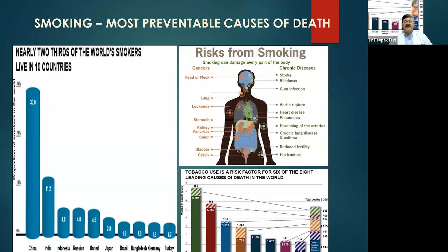Smoking is one of the leading preventable causes of high blood pressure as well as heart disease and is the leading cause of death. Prevalence of smoking is highest in countries like China, India, Indonesia, and Russia, and it is increasing in females. Apart from causing high blood pressure, smoking can cause cancers in almost any organ, stroke, blindness, aortic aneurysms, peripheral vascular disease, chronic lung disease. Of the top eight causes of death, smoking is responsible for the top six.